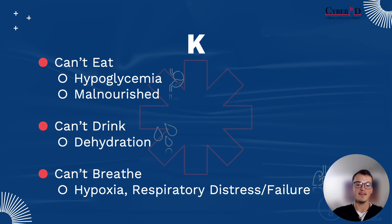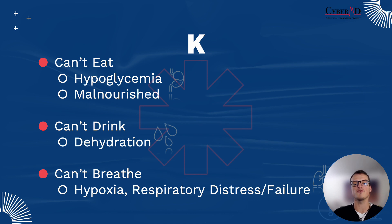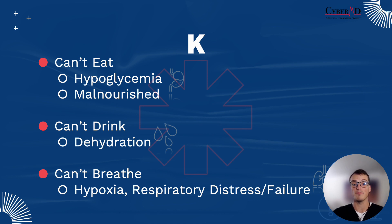The next letter is K — we're using the sound it makes — representing the three things you can't live without: food, water, and oxygen. If you can't eat, you may be hypoglycemic or malnourished. If you can't drink, you may be dehydrated. If you can't breathe, you may be hypoxic or in respiratory distress or failure. Consider all these diagnoses, especially hypoglycemia, in the vast majority of patients who complain of weakness.